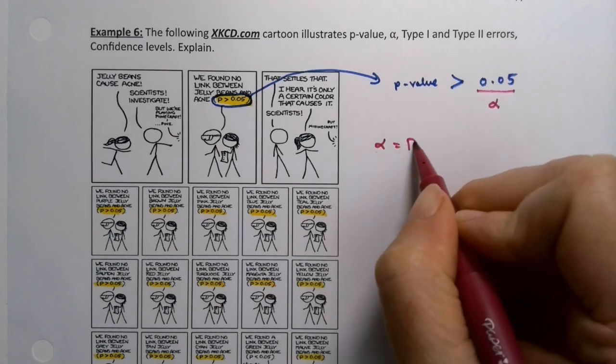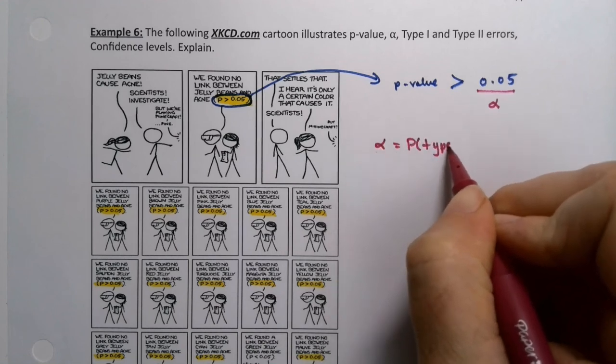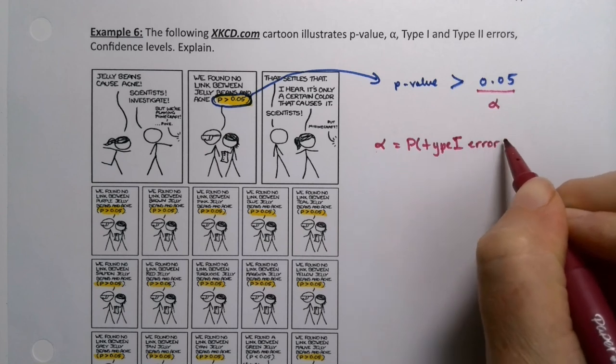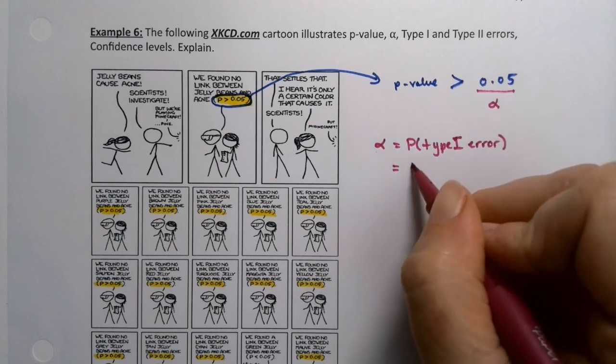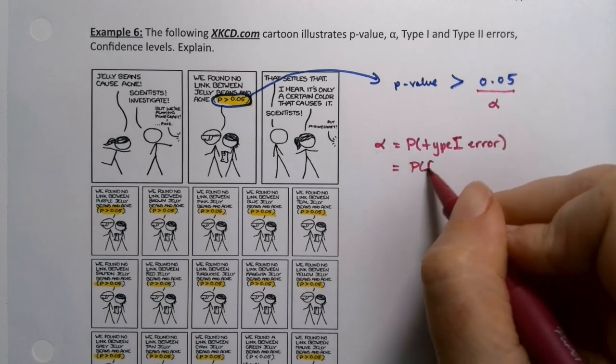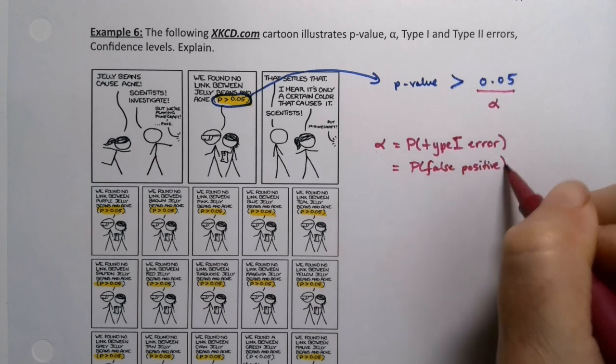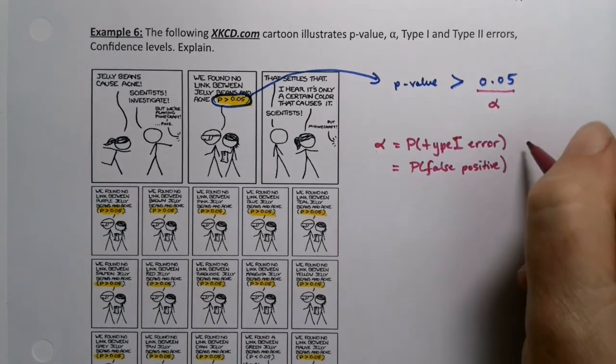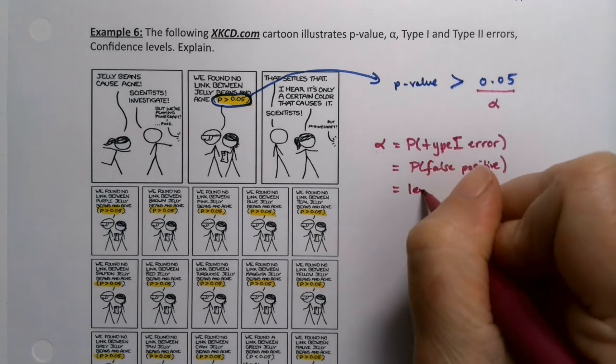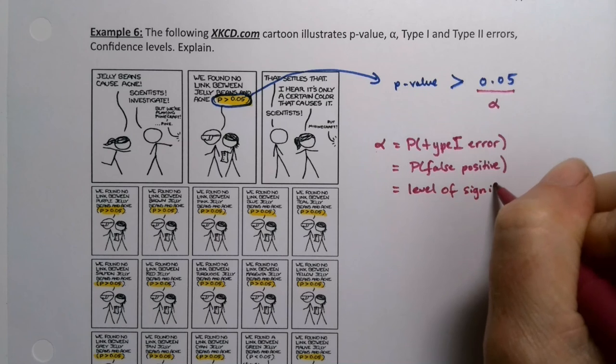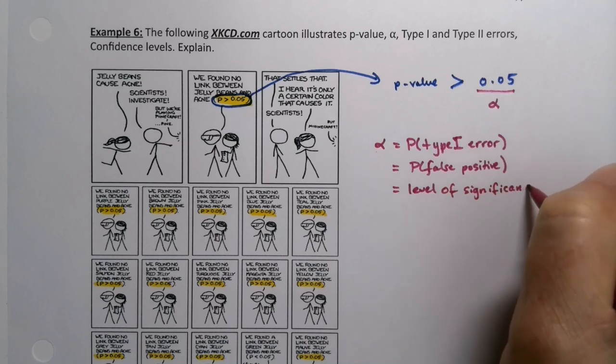So alpha is the probability of a type one error. It's your level of significance. It's the probability of a false positive, right? A false positive result. And it's the level of significance, right? All of those things we learned in section 10.1 and then started using really in section 10.2.